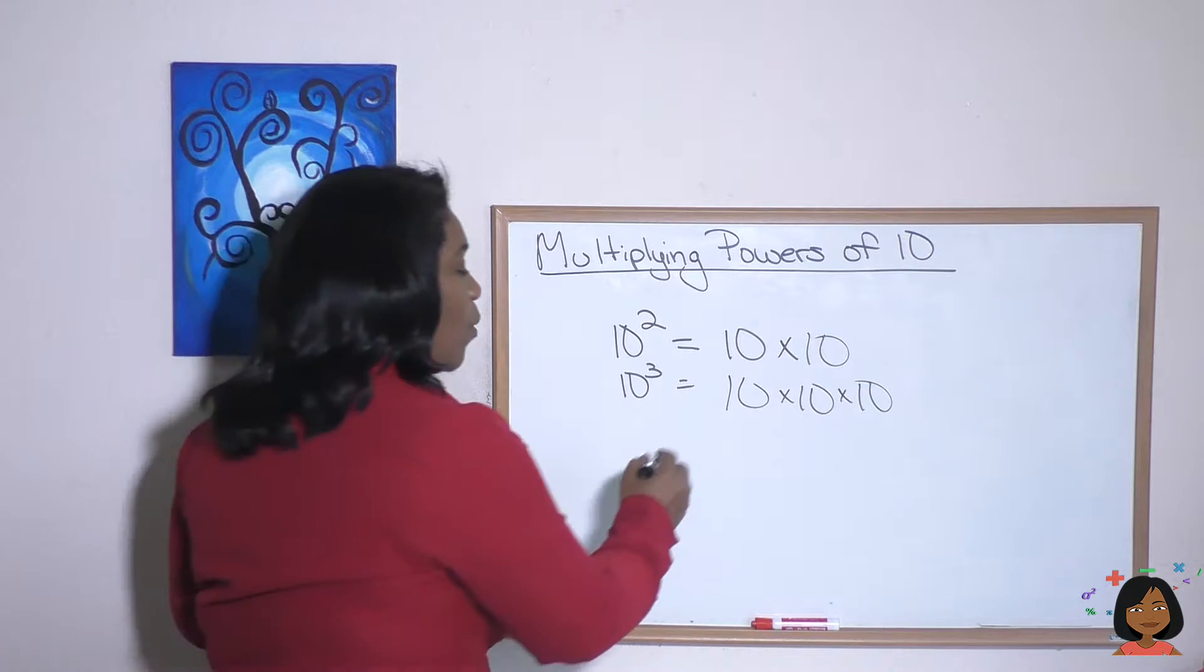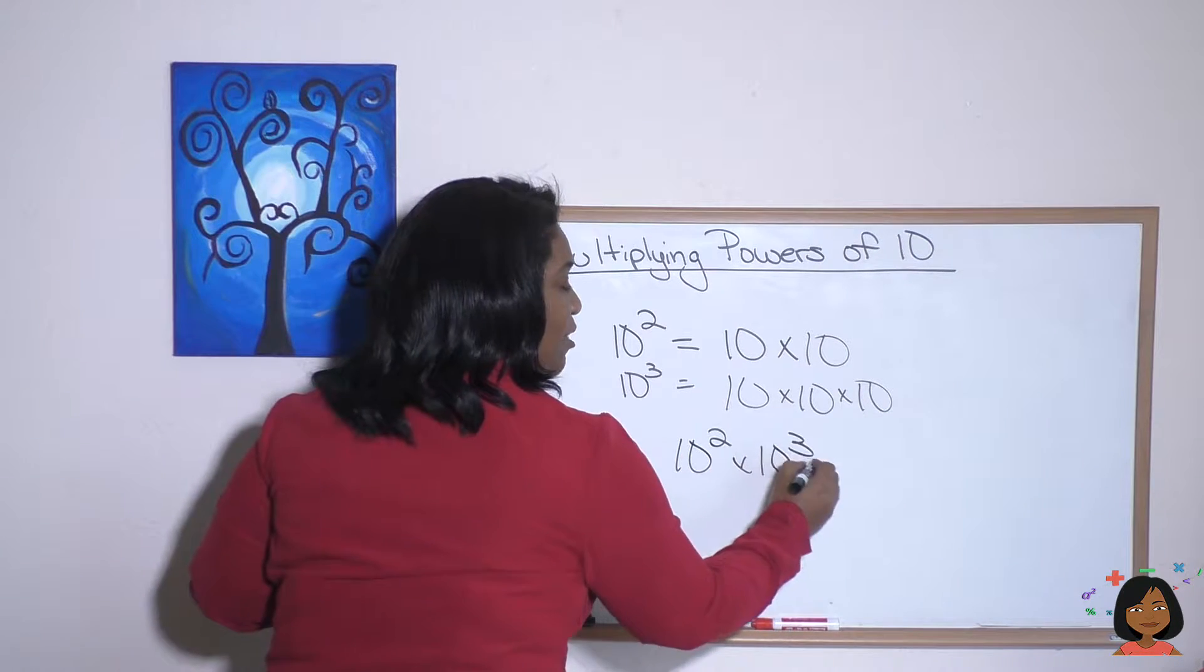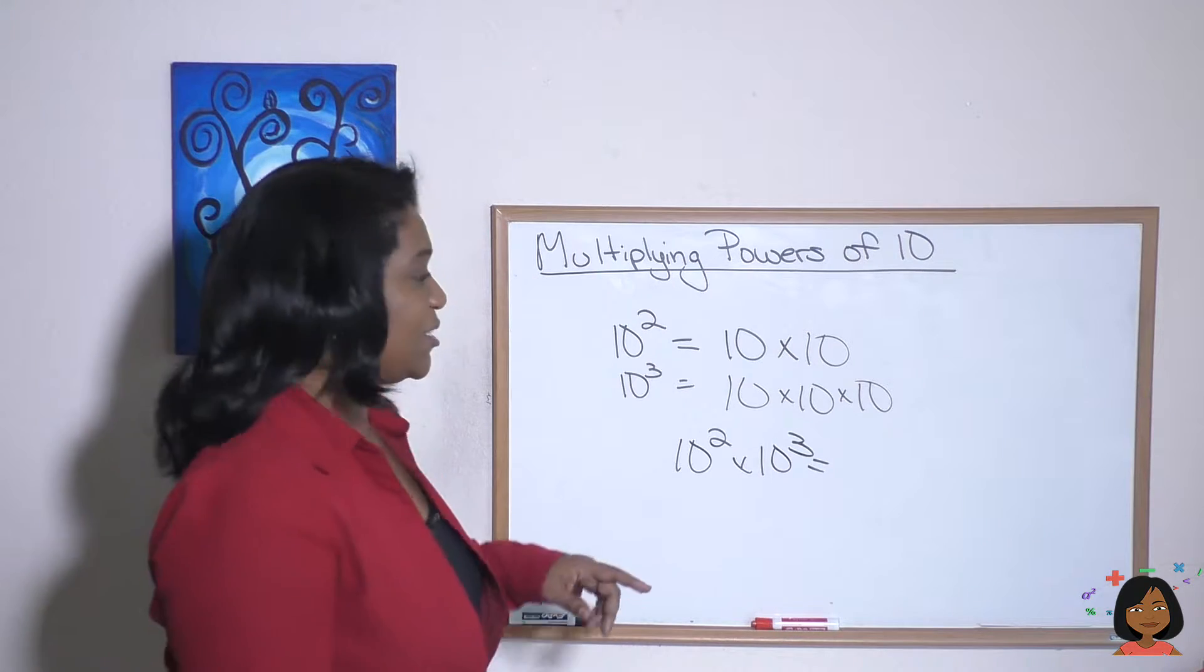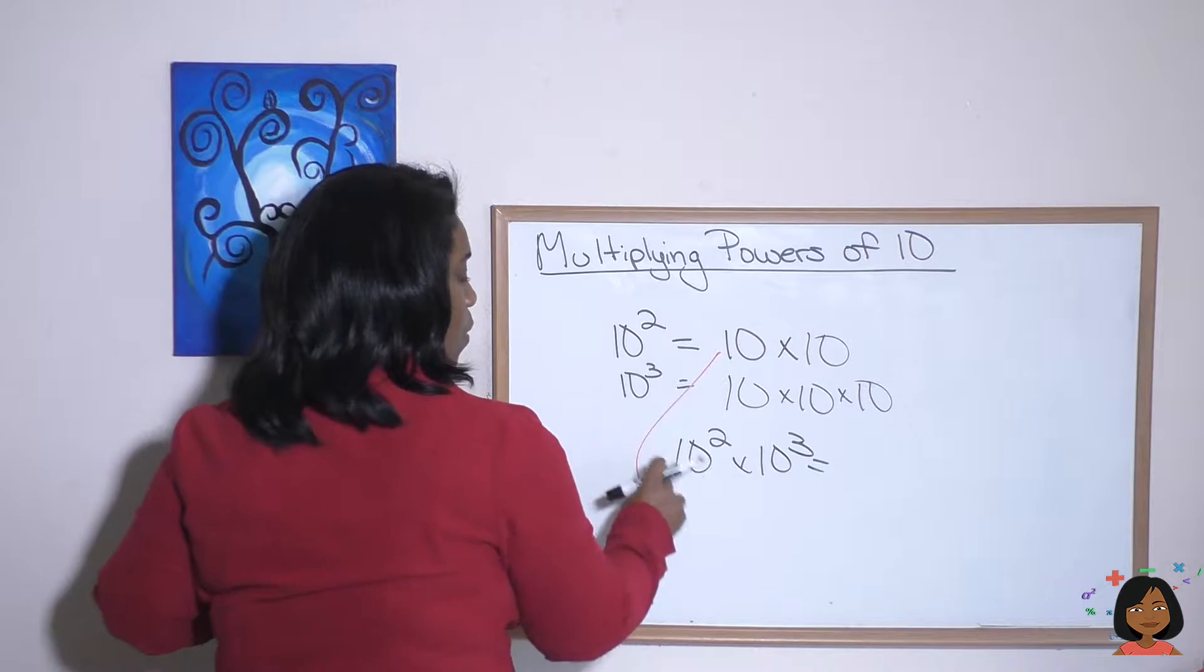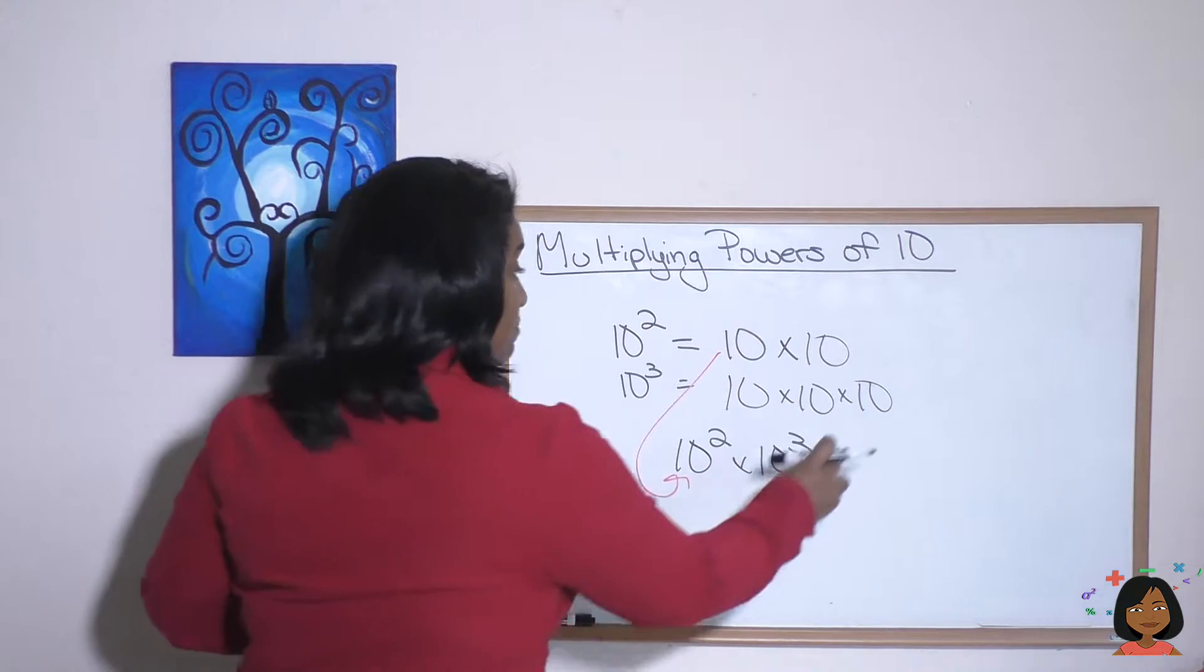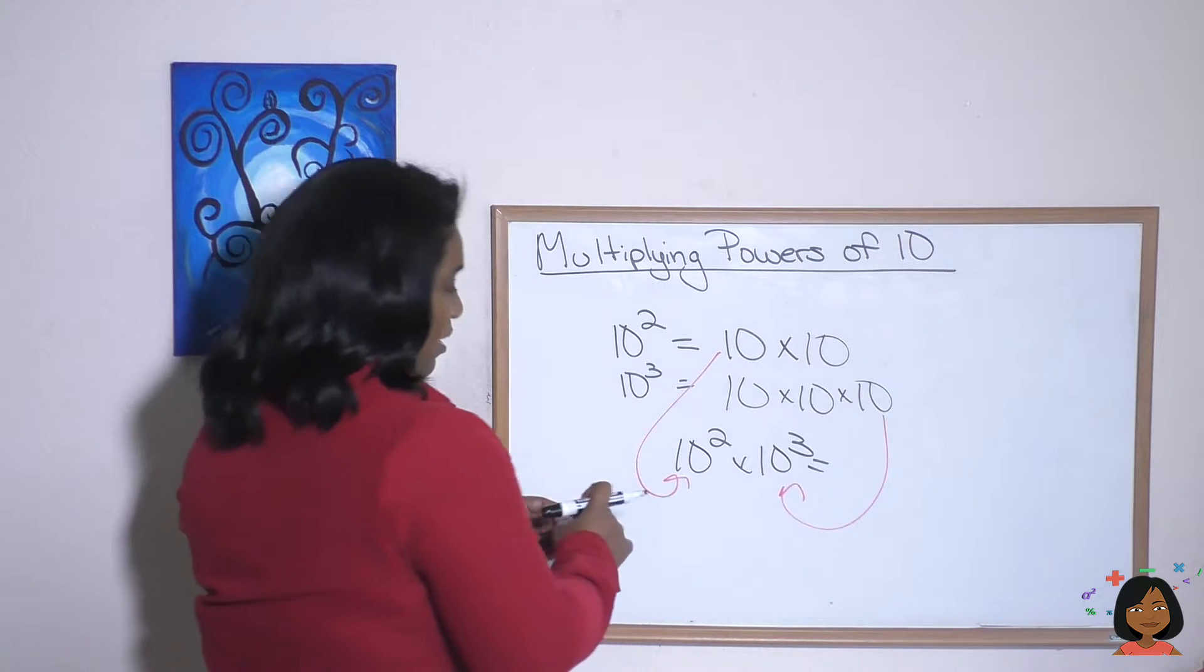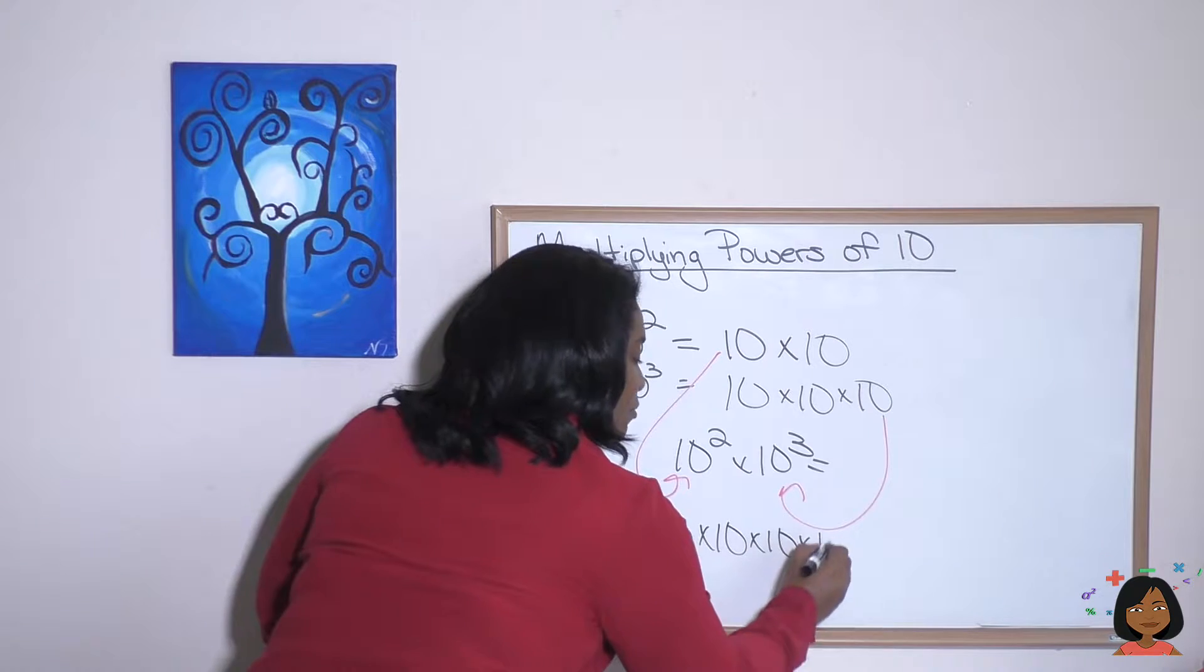Now if I wanted to do 10 squared times 10 to the third, it essentially would be saying 10 times 10, that's what this guy is, times 10 times 10 times 10. Right? I might as well go ahead and write that out for you. 10 times 10, and then three more.